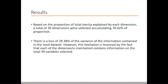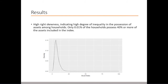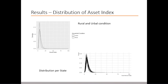Passing now to the results: a total of 71 dimensions were obtained from the PCAMix process. 39 were selected, accumulating a total of 70.62% of the proportion of inertia explained. It is worth mentioning that even though there is a loss of 29.39% of total variance explained, this limitation is lessened by the fact that each of the dimensions maintained contains information on all 49 variables selected. In the density distribution of the asset index at the national level, there is a clear high degree of inequality.